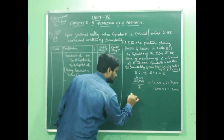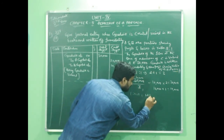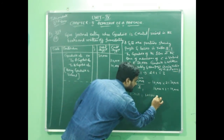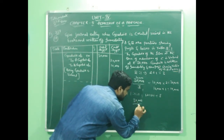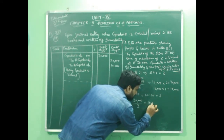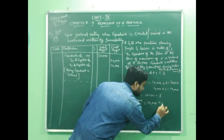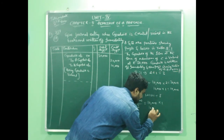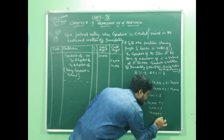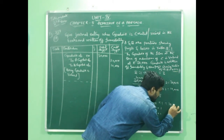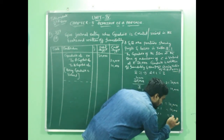So with ratio 1:1:1, 1 plus 1 plus 1 becomes 3. Fit se jo goodwill hai — 30,000 — uske 3 shares kare. The value of each share will be 10,000 as all the partners have 1 share each. So A will be getting 10,000, B will be getting 10,000, and also C will be getting 10,000.